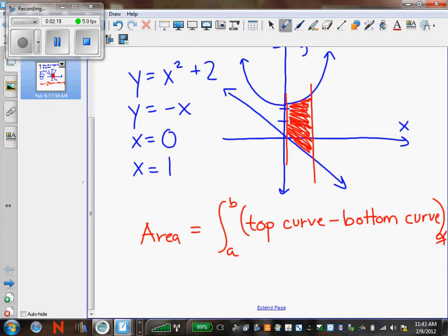Okay, so by top curve, you look at the shaded region, you draw in a line. The top curve is the one that's at the top of the line or the shaded region. The bottom curve is the equation that's at the bottom or further below.